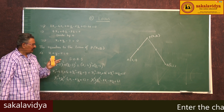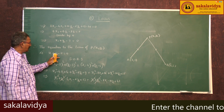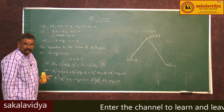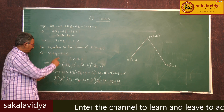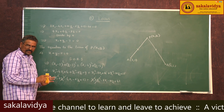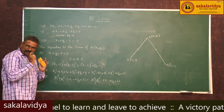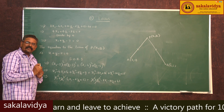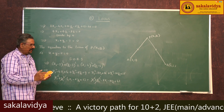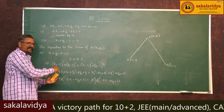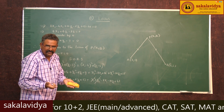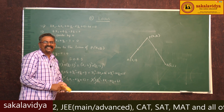Do you know what x + y − 7 = 0 represents? This is a linear equation in x and y. A linear equation in x and y always represents a straight line.